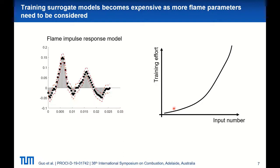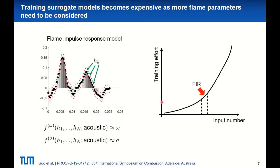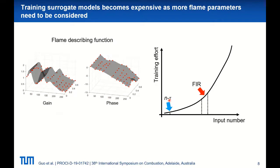For the linear case, for example, we may use a flame impulse response model, which describes flame dynamics in the time domain. Those model coefficients h_k, usually identified from noisy CFD simulations with limited time series data, are uncertain. This type of model usually contains 30 to 70 coefficients. Therefore, the training effort of building surrogate models for the FIR model will be much higher than, say, building a surrogate model for an n-tau model, which only has two parameters.